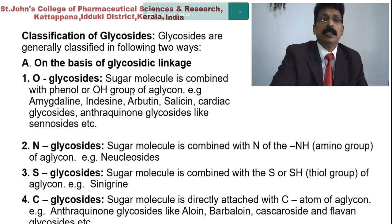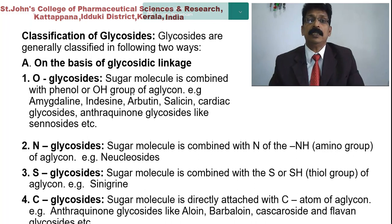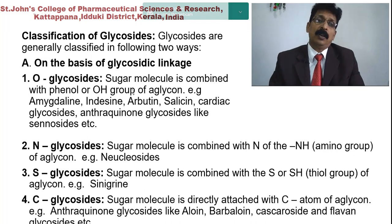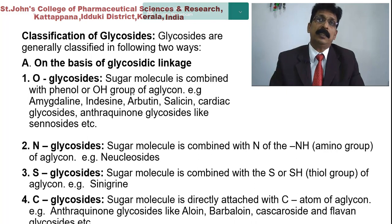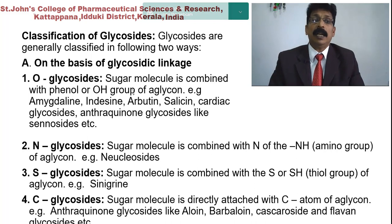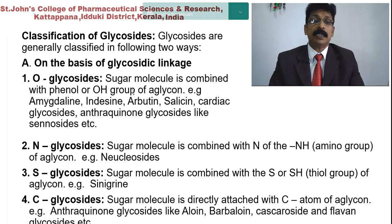Glycosides are generally classified in two ways. First, by means of their linkage. A glycoside has two parts: an aglycon part and a sugar part, which are linked. The linkage can be through oxygen, carbon, hydrogen, or sulfur. According to the linkage, glycosides are differentiated into O-glycosides, N-glycosides, S-glycosides, and C-glycosides.